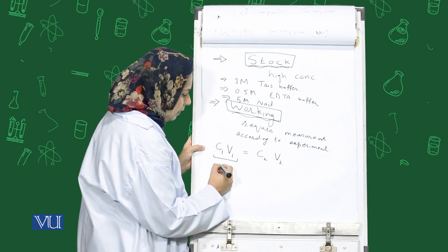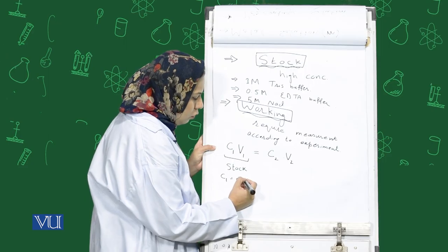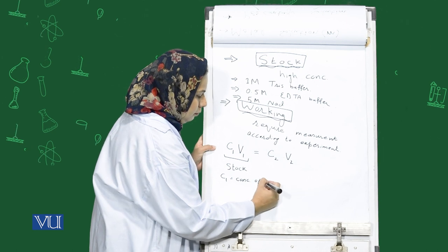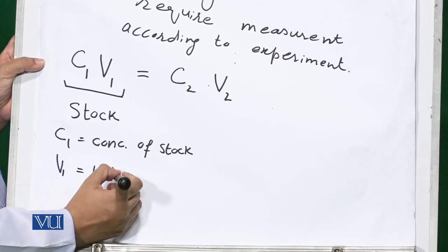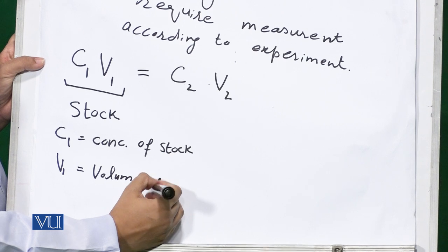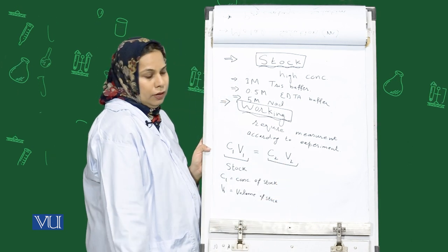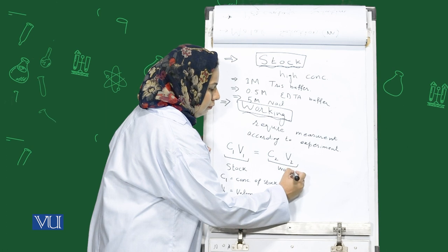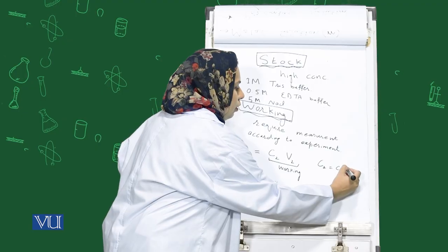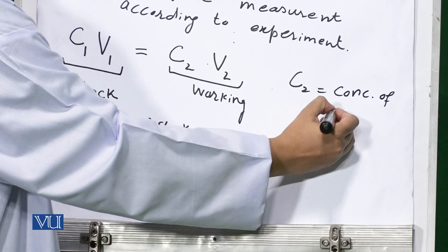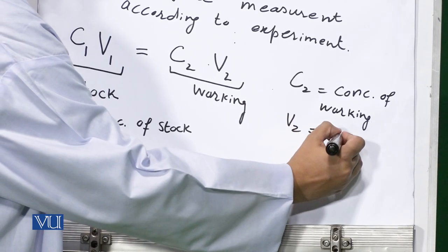How can you prepare a working solution from a stock solution? This is a very important formula that you should be acquainted with: C1V1 equals C2V2. C1 represents the concentration of the stock solution and V1 represents the volume of the stock solution. C2 represents the concentration of the working solution and V2 represents the volume of the working solution.